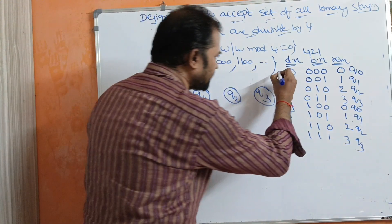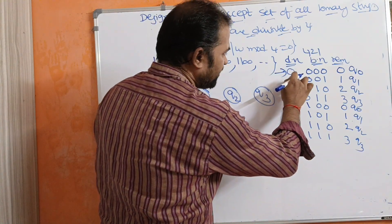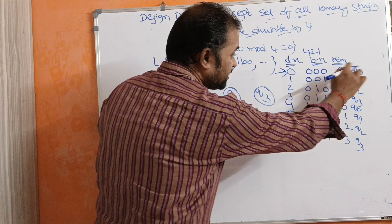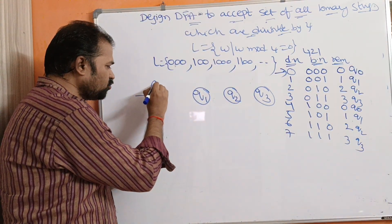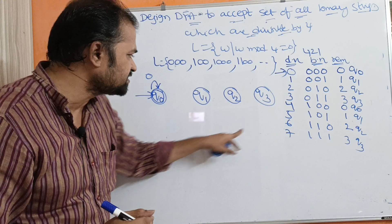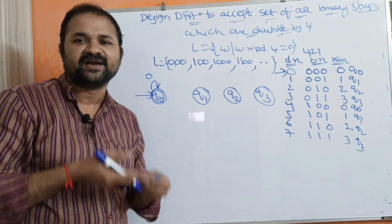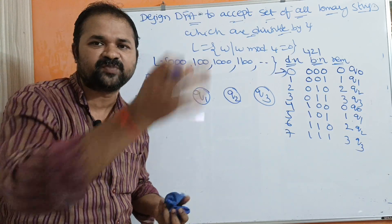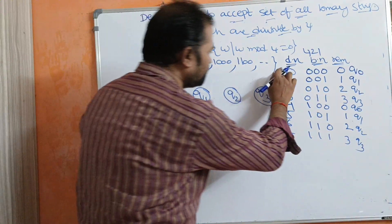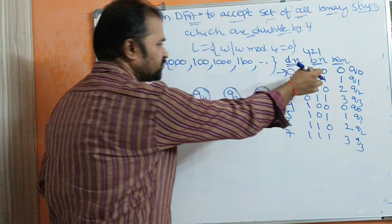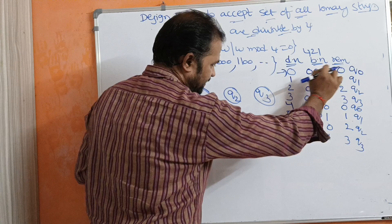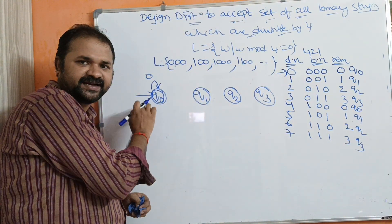Let's observe the transitions one by one. If we apply any number of 0's on Q0, we remain at Q0 — so there is a self-loop on Q0 for input 0. For 0's we use top transitions and for 1's we use bottom transitions. In DFA, all symbols must be defined for each state, so every state must have transitions for both 0 and 1.